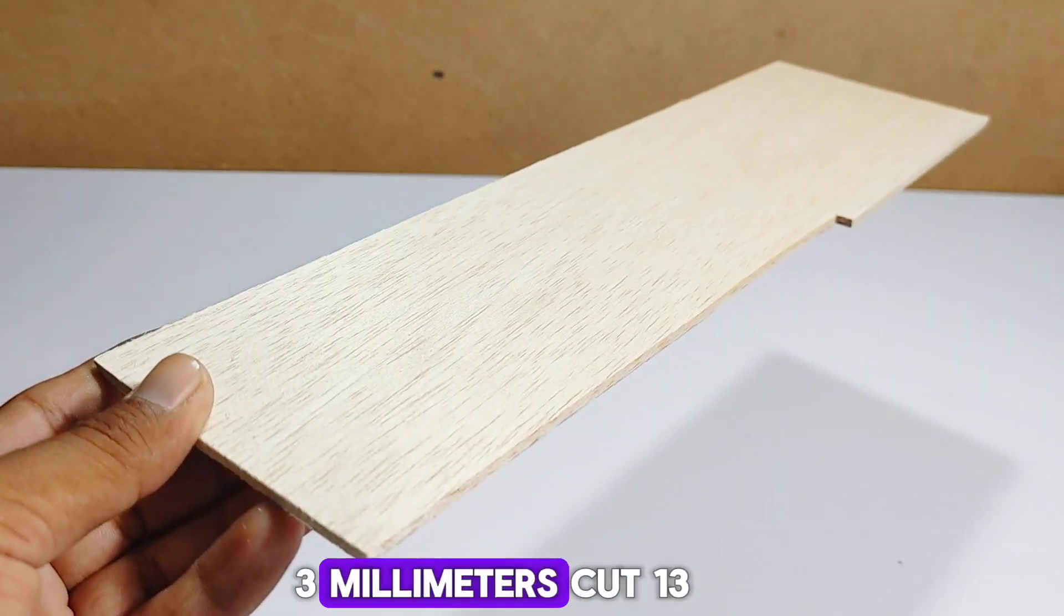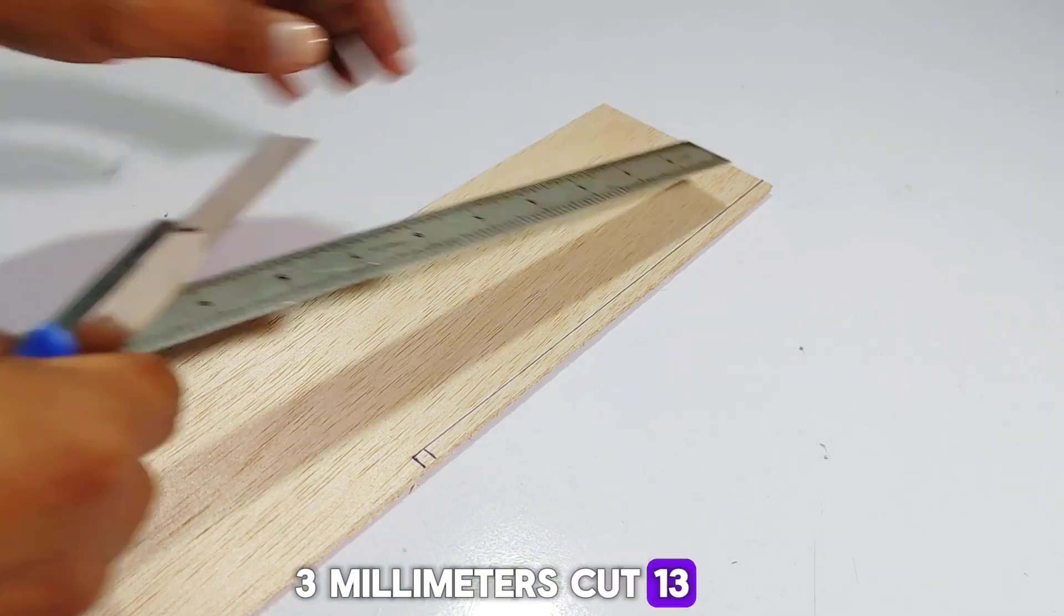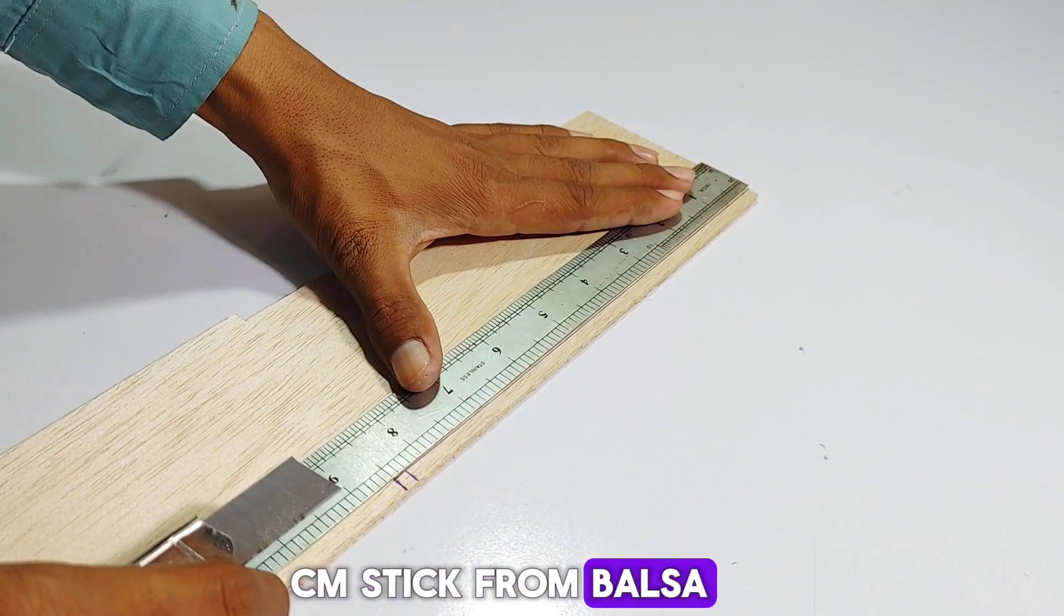Using balsa wood stick 3 mm, cut 13 cm stick from balsa wood sheet.